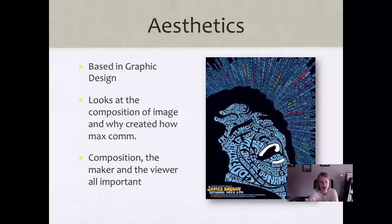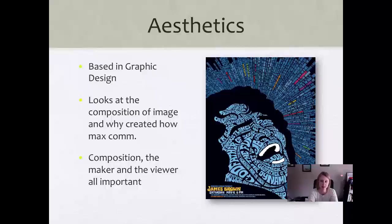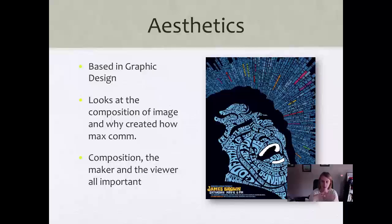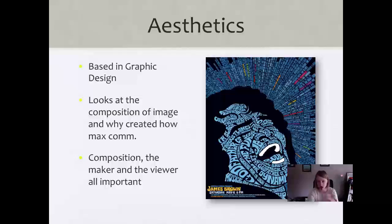One of the first theories you'll see is aesthetics. We talk about aesthetics a lot when it comes to basic graphic design. Aesthetics is the art, the colors, the texts, the shapes — it's the composition of the image and how it's created. How are we maximizing communication based on this composition? When we look at aesthetics in research, we look at not only the composition, but the maker and the viewer. Looking at this poster, aesthetically we've got lines of text coming in to what we see as a human's face — obviously James Brown based on the text, the color, the words, the blues, the theme.